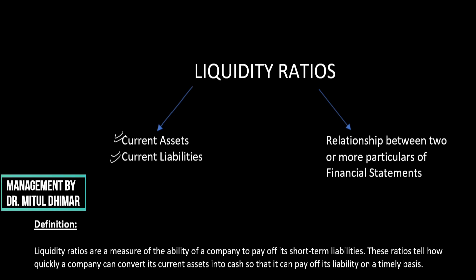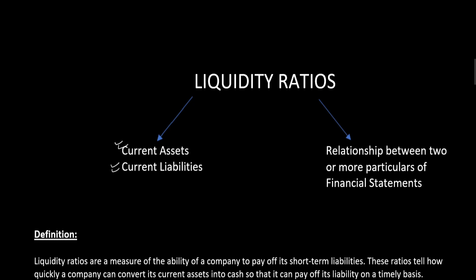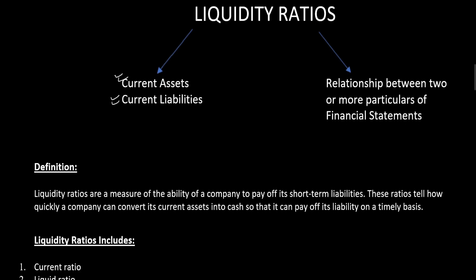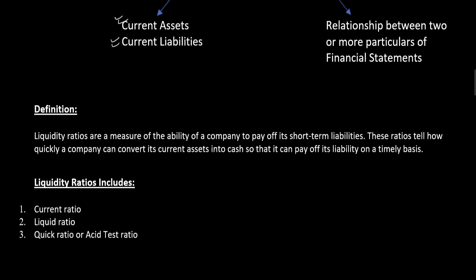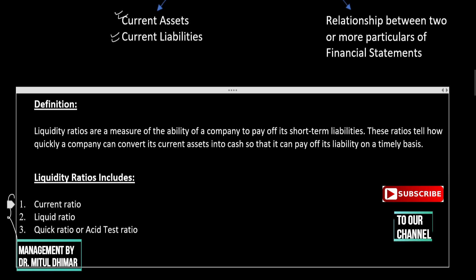Liquidity ratios are a measure of the ability of a company to pay off its short-term liabilities. These ratios tell how quickly a company can convert its current assets into cash so that it can pay off its liabilities on a timely basis. The different ratios under this head are: current ratio, liquid ratio, and quick ratio or acid test ratio.